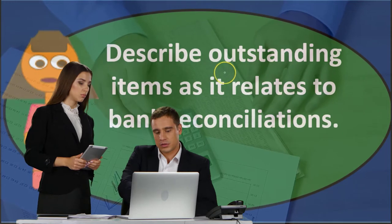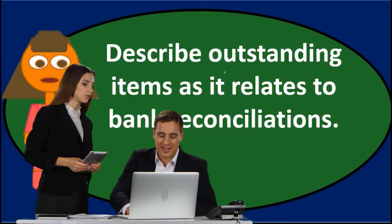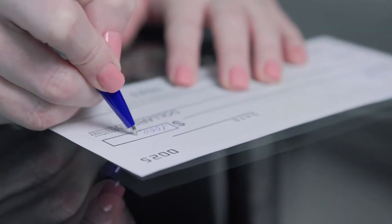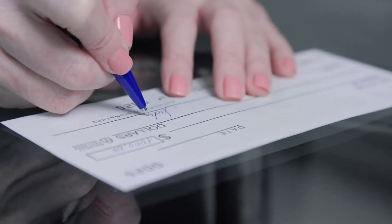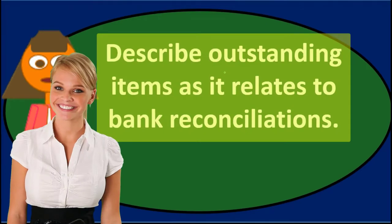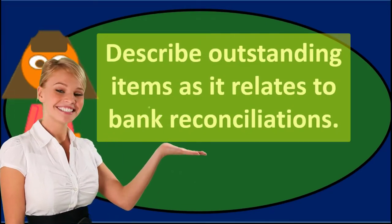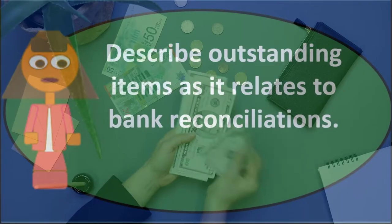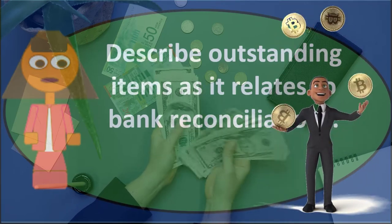The outstanding items are going to be the key differences — the differences between what the bank statement says the balance is at a certain point in time and what the books say it is at that same point in time. We typically think of outstanding checks and outstanding deposits as two types of outstanding items, so it's kind of a broad term.